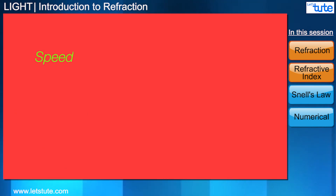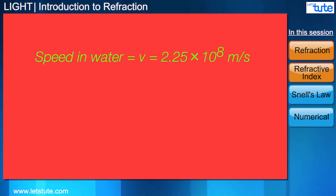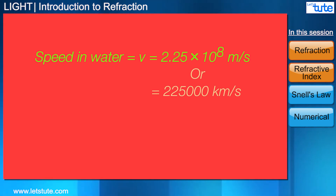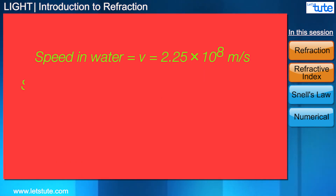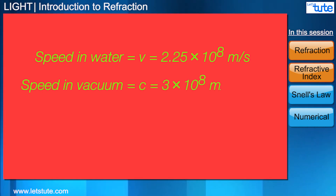The speed of light in water is 2.25 × 10⁸ meters per second, or around 2 lakh 25 thousand kilometers per second. And the speed of light in vacuum is 3 × 10⁸ meters per second, or 3 lakh kilometers per second.